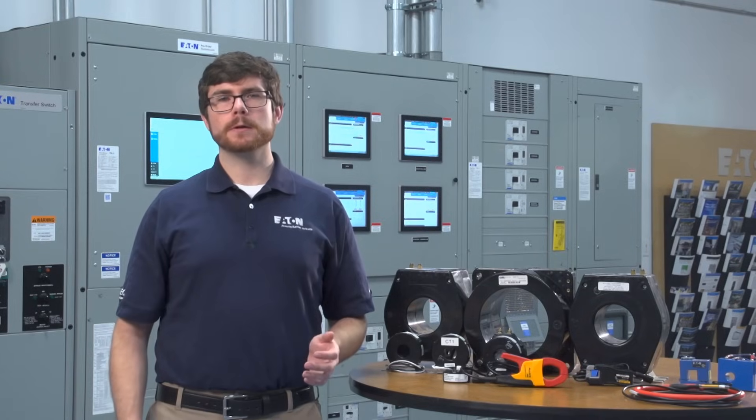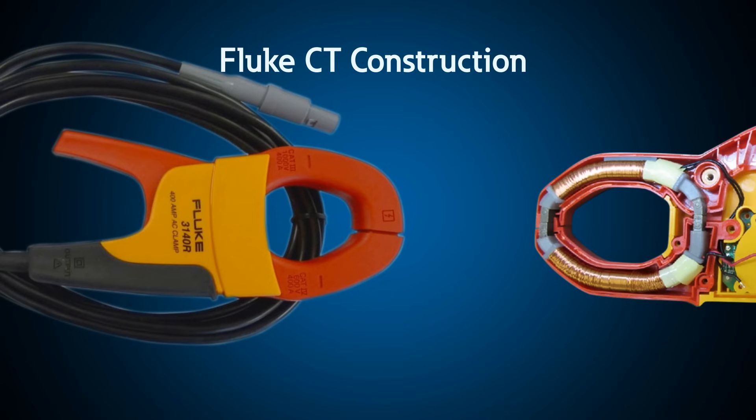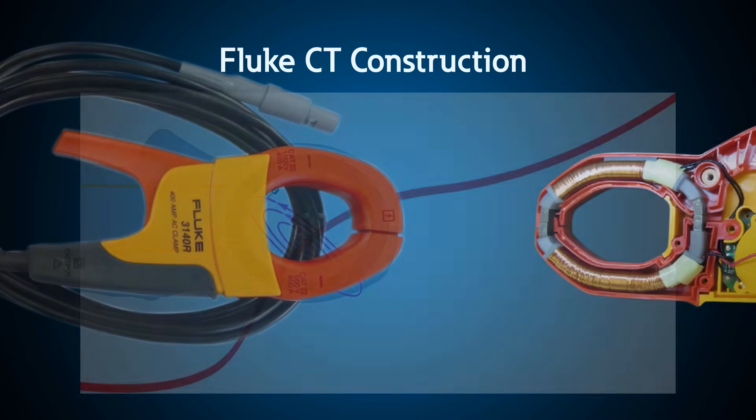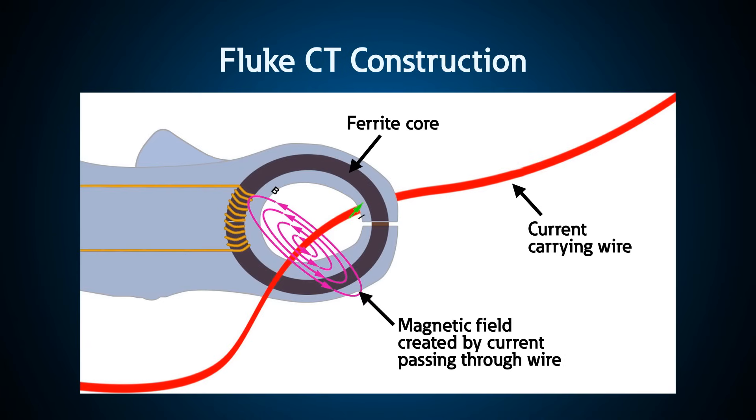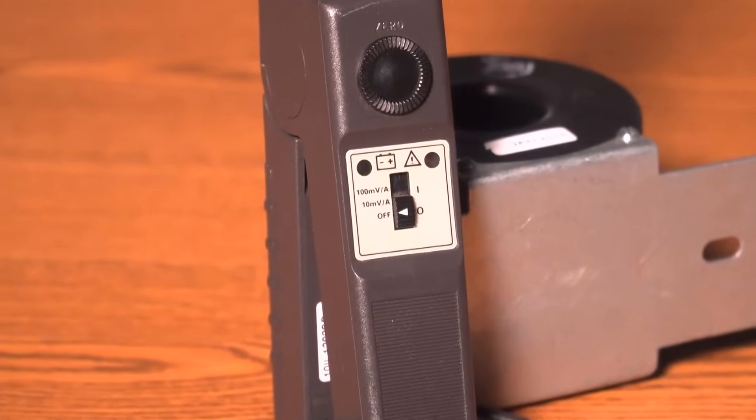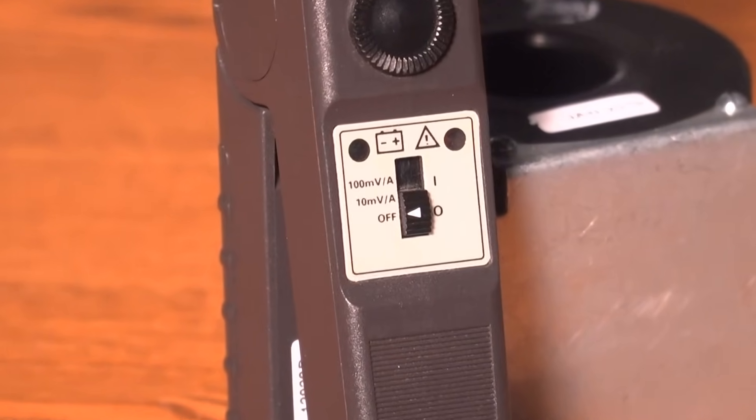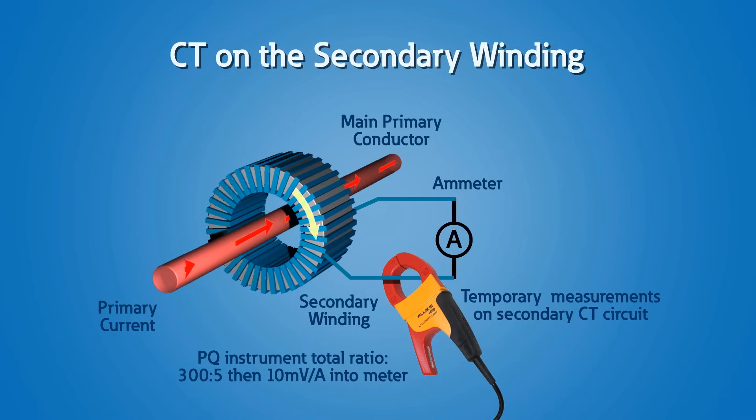All CTs output a current that is then used for metering, but temporary CTs, like those used in Fluke and other power quality instruments, add a terminating resistor on the secondary winding so that they output a voltage and can be open circuited when connecting the meter. With this resistor, these CTs typically have a rating of 10 millivolts per amp or 100 millivolts per amp. The lower range ratio is usually used for secondary measurements, in other words, clamping onto the 5 amp secondary of another CT.